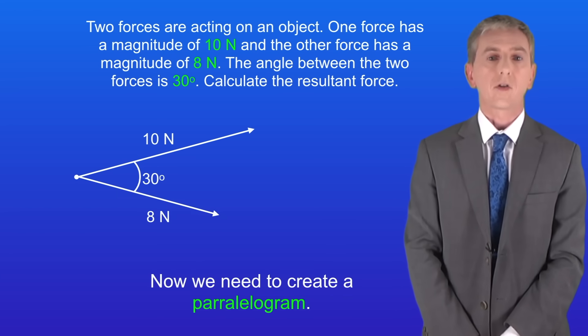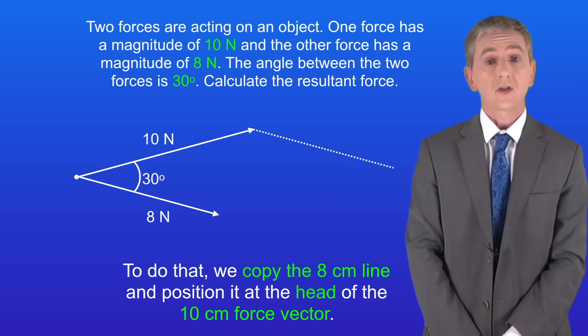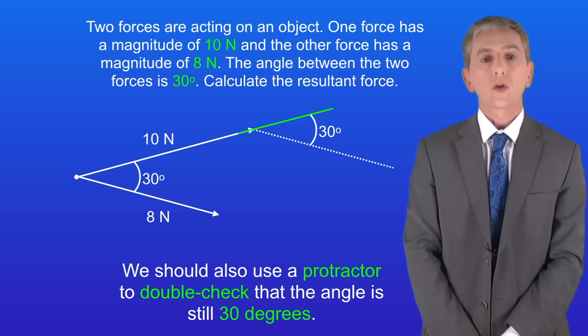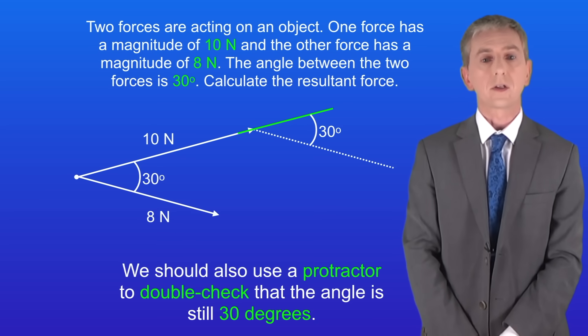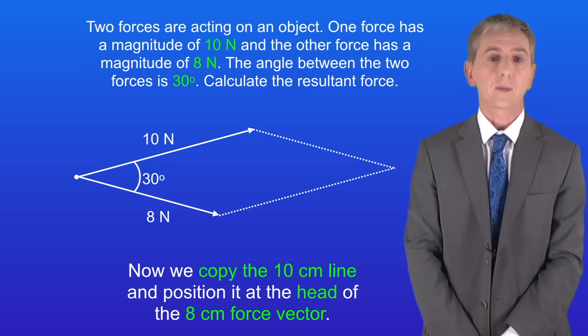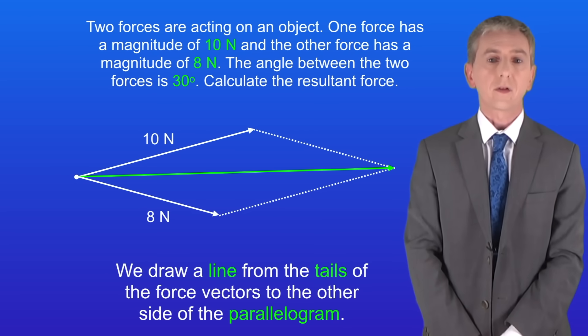And now we use a ruler to draw an 8 centimeter arrow to represent the 8 newton force. Now we need to create a parallelogram. To do that we copy the 8 centimeter line and position it at the head of the 8 centimeter force vector. We should also use a protractor to double check that the angle is still 30 degrees. Now we copy the 10 centimeter line and position it at the head of the 8 centimeter force vector. And then we draw a line from the tails of the force vectors to the other side of the parallelogram.